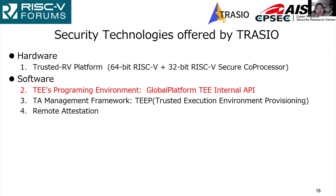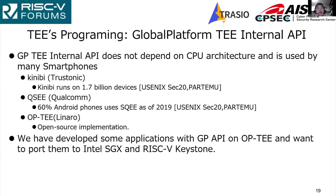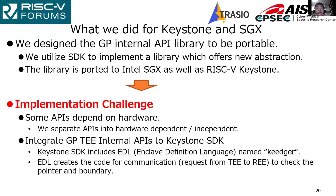The second solution is for the TEE programming environment. We use the GlobalPlatform TEE Internal API, which does not depend on CPU architecture and is popular for smartphones. We have developed some applications with GP API and want to port them to Intel SGX and RISC-V Keystone. This is our motivation to develop a portable library for the GlobalPlatform TEE Internal API. We designed it to be portable using existing SDKs, separating hardware-dependent and independent APIs, and integrating GP TEE Internal API into Keystone SDK with its EDL — Enclave Definition Language — which creates communication code and checks pointers and boundaries.